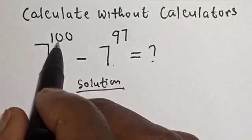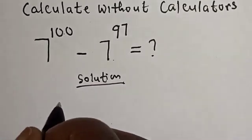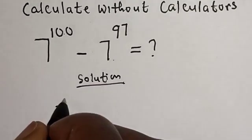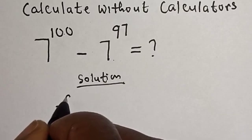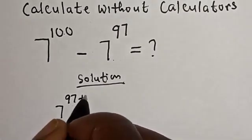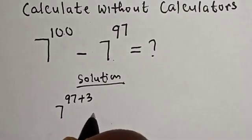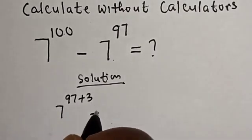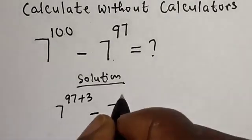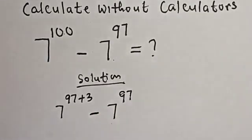7 raised to power 100 can be written as 7 raised to power 97 plus 3, minus 7 raised to power 97.